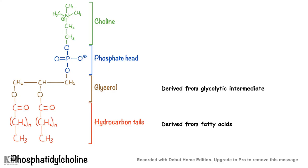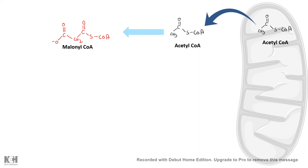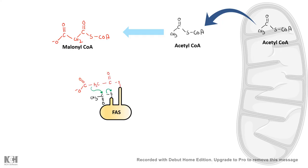The first process is fatty acid biosynthesis, which always takes place in the cytoplasm. The raw material is acetyl-CoA, which exits the mitochondria and in the cytoplasm forms malonyl-CoA with the help of acetyl-CoA carboxylase. Malonyl-CoA and acetyl-CoA condense on the fatty acid synthetase complex — a huge complex — and followed by several reduction and dehydration steps, they form fatty acids.